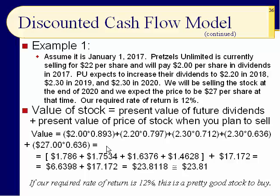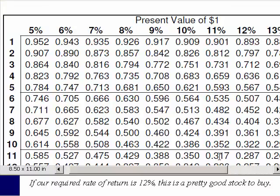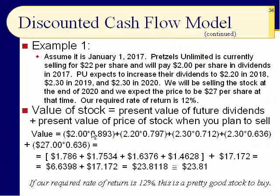We use the present value tables. Go across to 12 percent, then down: one year, two years, three years, four years — and those are your present value multipliers (PVMs). The PVM for year one at 12 percent is 0.893. So we take that $2 and multiply it by 0.893, which tells us that $2 a year from now is worth $1.79 today. For year two, the PVM is 0.797.